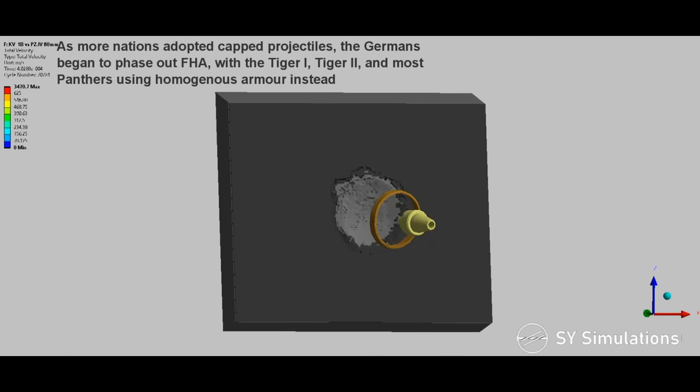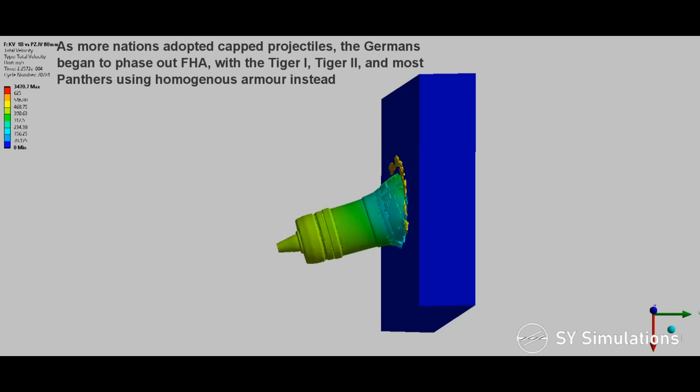As more nations adopted capped projectiles, the Germans began to phase out face-hardened armor, with the Tiger I, Tiger II, and most Panthers using homogenous armor instead.